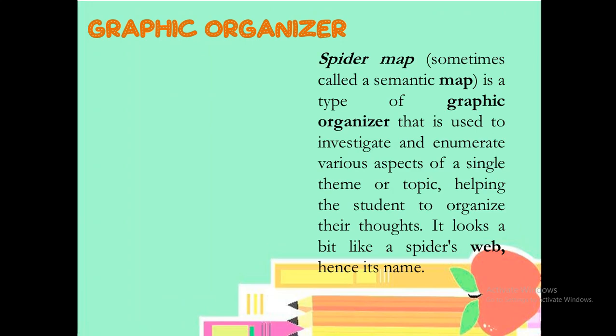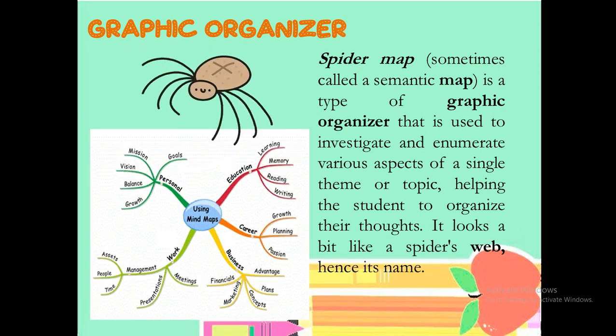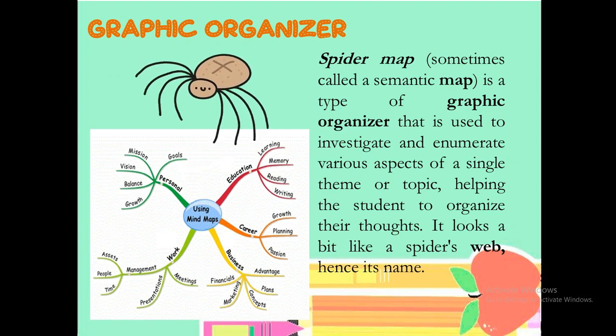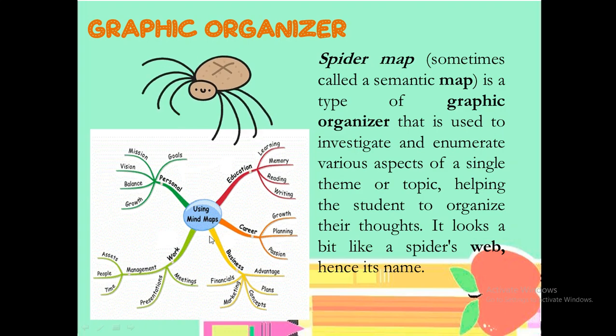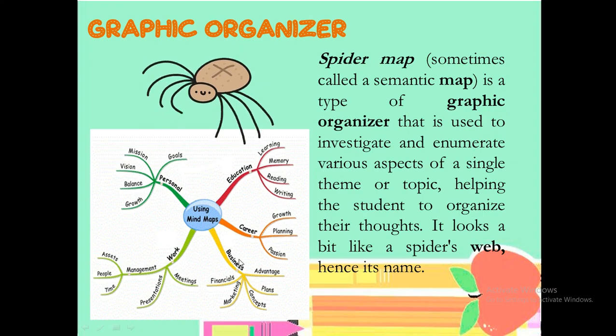The next one would be spider map, also synonymous or actually a bit similar to the tree diagram and the concept map. Wherein spider map, sometimes called a semantic map, is a type of graphic organizer that is used to investigate and enumerate various aspects of a single theme or topic. Helping the student to organize their thoughts, it looks a bit like a spider's web, hence its name came or derived. As you observe, you have here the central circle then it will be sprouting again into different limbs. That's why it looks like a spider because of its structure at the end.